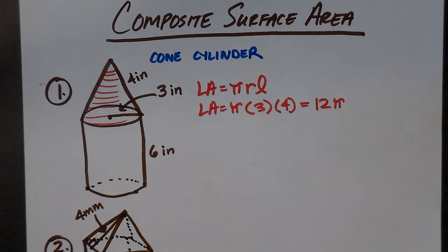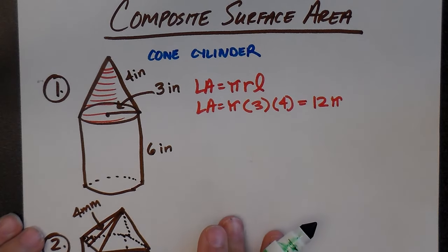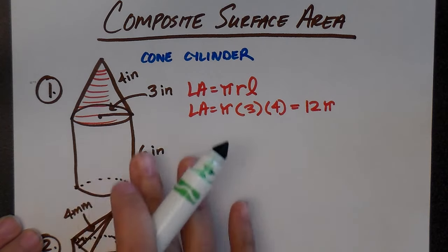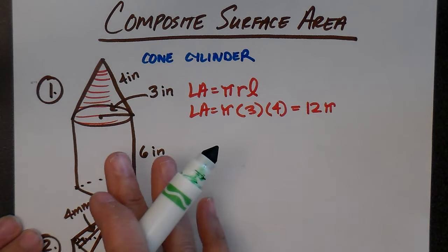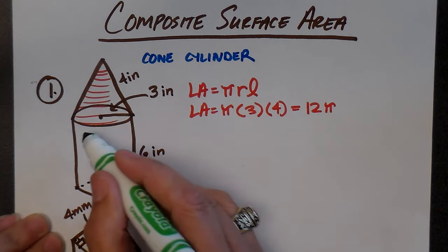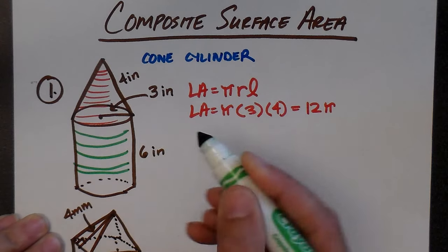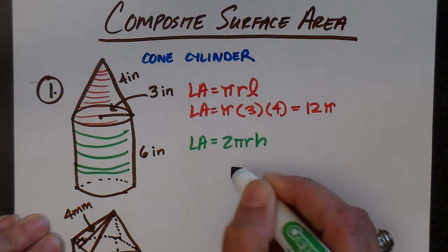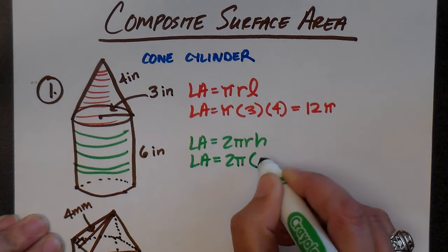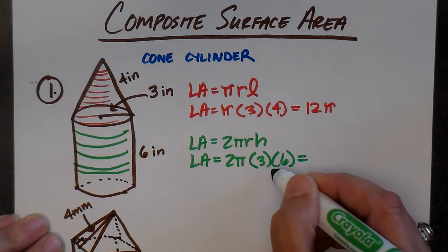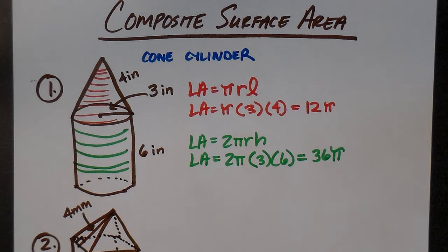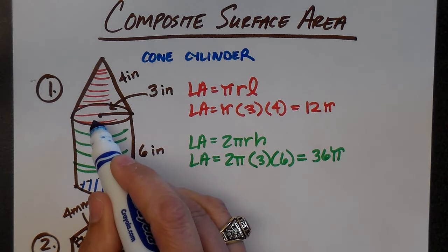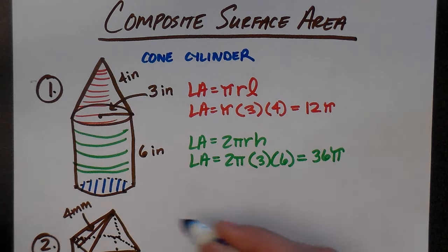Now let's look at the cylinder. The cylinder has multiple things showing: the lateral portion and one of the bases. You can either find the entire surface area and subtract the base you can't see, or do the lateral area and add the base you can see. The lateral area of a cylinder is 2πrh, so that's 2 times pi times 3 times 6, giving us 36 pi.